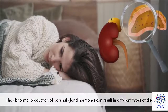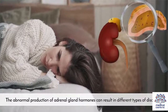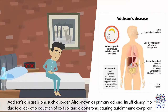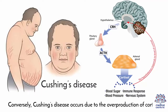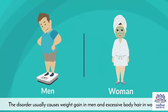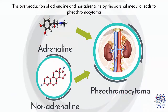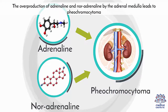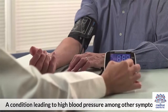Types – The abnormal production of adrenal gland hormones can result in different types of disorders. Addison's disease, also known as primary adrenal insufficiency, occurs due to a lack of production of cortisol and aldosterone, causing autoimmune complications. Conversely, Cushing's disease occurs due to the overproduction of cortisol, and usually causes weight gain in men and excessive body hair in women. The overproduction of adrenaline and noradrenaline by the adrenal medulla leads to pheochromocytoma, a condition causing high blood pressure, among other symptoms.